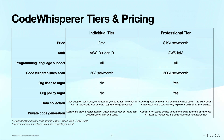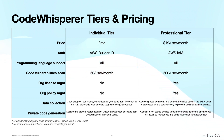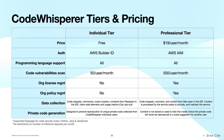Both tiers support all programming languages and both tiers support code reference tracking. With respect to code security scans, the Individual tier has a limit of 50 code security scans per user per month, while the Professional tier allows 500 code security scans per user per month.